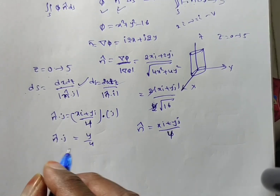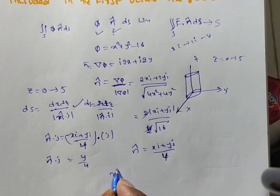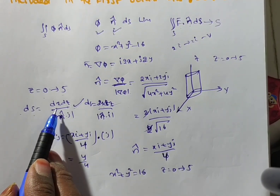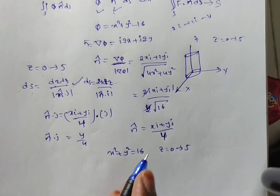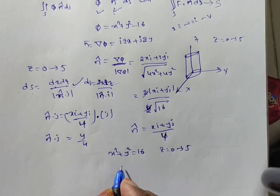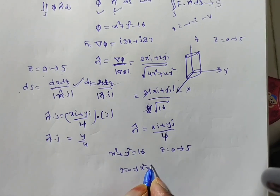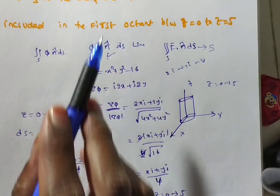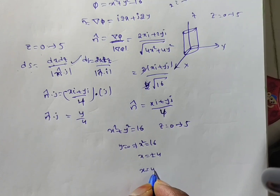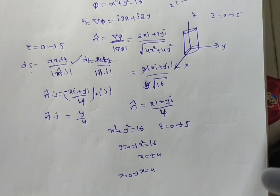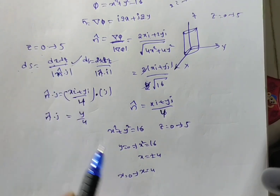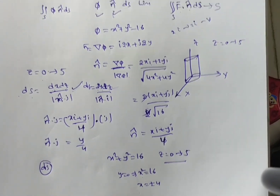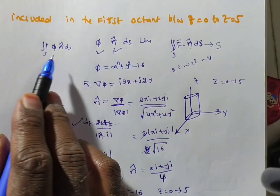Now we need the limits. We are integrating with respect to x and z. Z limits are 0 to 5. For x limits, put y = 0 in x² + y² = 16, which gives x² = 16, so x = ±4. Since we are in the first octant, x ranges from 0 to 4. So x: 0 to 4, z: 0 to 5. Now we have all values — φ value, n̂ value, dS value, and limits.